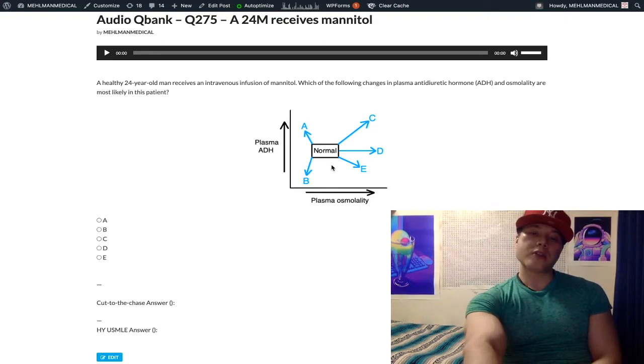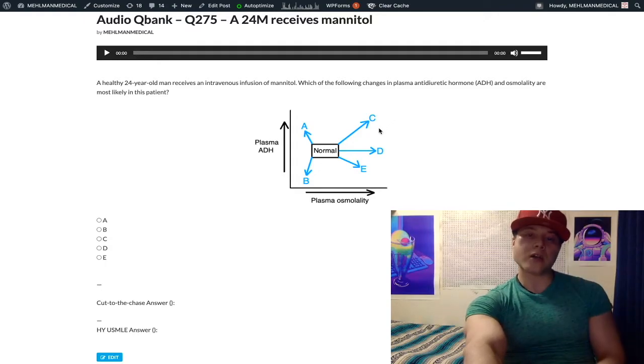But the answer is going to be C, because we just said mannitol will increase osmolality of the serum due to increasing oncotic pressure, and increased osmolality will cause the release of ADH from the posterior pituitary and more production from the hypothalamus. So our answer is C.